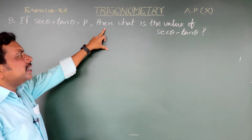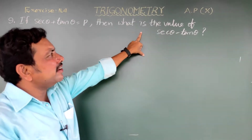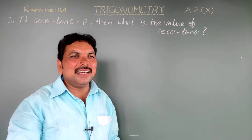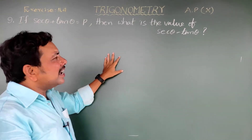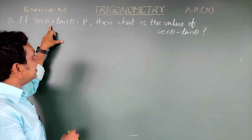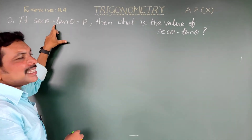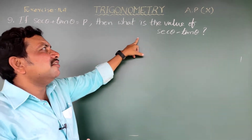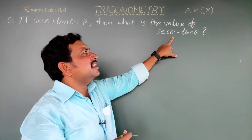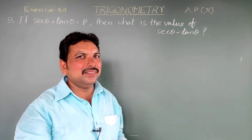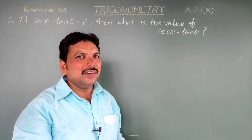Next, ninth question: if secant theta plus tan theta equals p, then what is the value of secant theta minus tan theta? Given: secant theta plus tan theta equals p. We have to find secant theta minus tan theta.